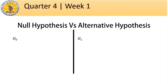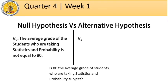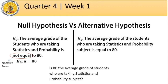To test your understanding, let's go back to our first problem where the researcher is suggesting that 80 is the average grade of students who are taking statistics and probability. Please hit the pause button and write your own null and alternative hypothesis. The null hypothesis can be written as H sub 0: the average grade of students who are taking statistics and probability subject is not 80. Note that the null hypothesis is always in negative form. We can also write this in symbols as mu — the notation for mean — is not equal to 80. The alternative hypothesis, H sub 1, is that the average grade is 80, the total opposite of H sub 0.